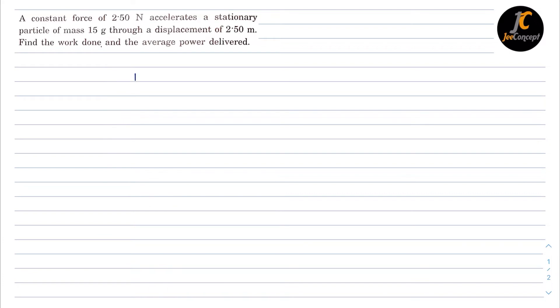So given data is F equals 2.5 Newton. The mass of the object is 15 grams, that means 15 into 10 raised to power minus 3 kg. The displacement is 2.5 meters.